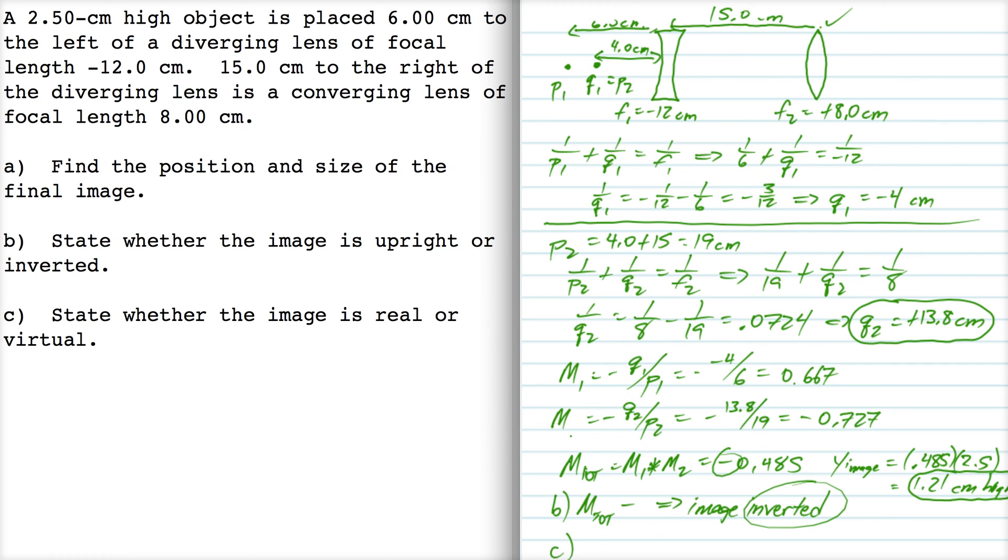And then finally, part C is the image real or virtual. Well, since that final image distance is positive, that indicates that the image is real.